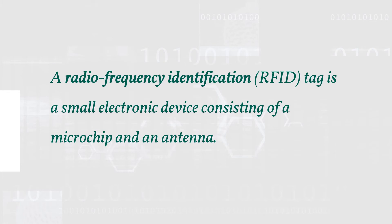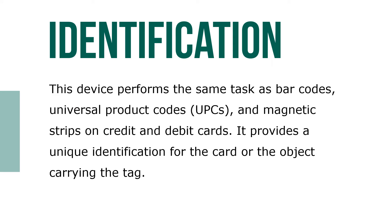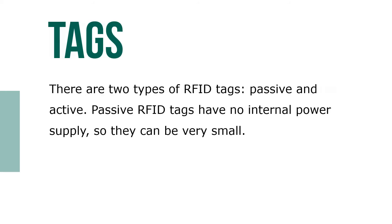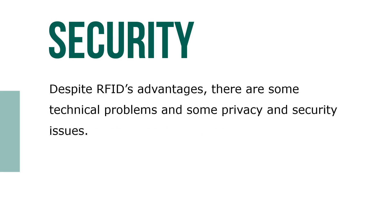Radio frequency identification (RFID) is a small electronic device consisting of a microchip and antenna. This device performs the same tasks as barcodes, universal product codes (UPCs), and magnetic stripes on a credit card or debit card. It provides a unique identification for the card or the object carrying the tag. Unlike barcodes and other systems, RFID devices do not have to be in contact with the scanner to be read. There are two types of RFID tags – passive and active. Passive RFID tags have no internal power supply, so they can be very small. Despite RFID's advantages, there are some technical problems and some privacy and security issues.